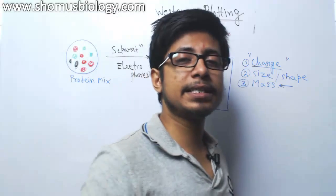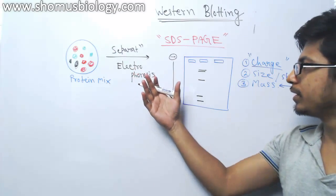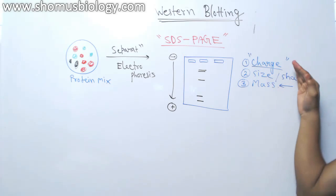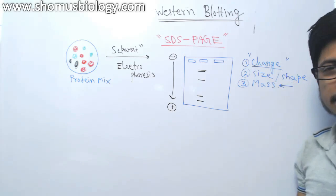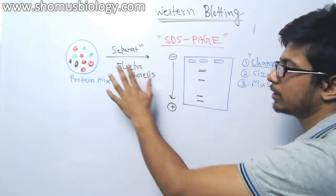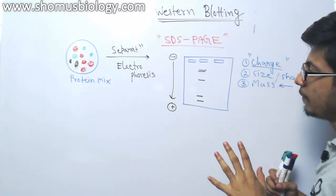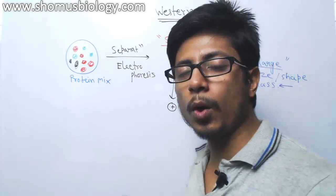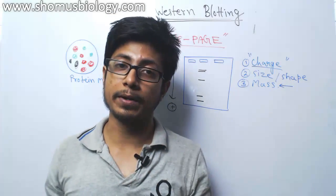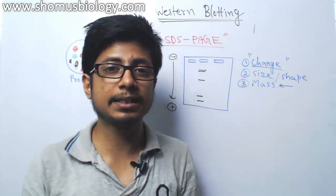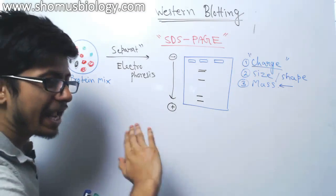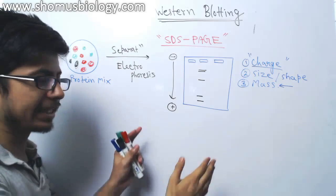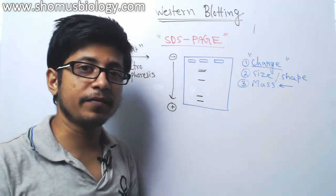With the help of SDS-PAGE, we separate the mixture of proteins based on their mass. Then we need to use a probe to find out a target protein. That is the third step of the blotting process. Every blotting process consists of three stages: the first step is extraction and isolation, the second step is electrophoresis, and the third step is probing.